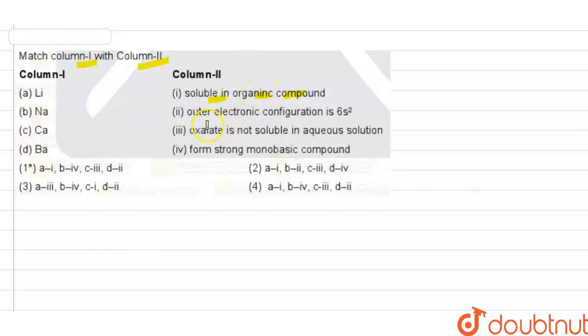In column 2 we have properties: soluble in organic compounds, outer electronic configuration is 6s2, oxalate is not soluble in aqueous solution, and forms strong monobasic compounds. These are all the properties for this question.